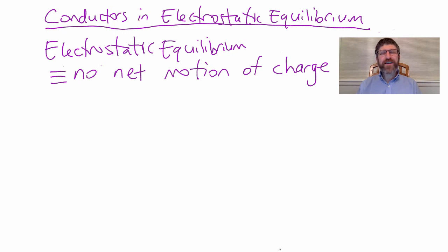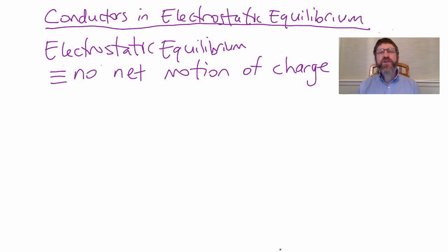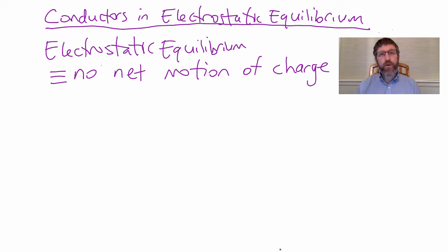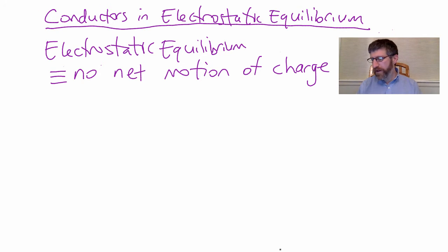The next topic we'll be discussing is conductors in electrostatic equilibrium. Electrostatic equilibrium is defined as the situation in which there is no net motion of charge. If a conductor is in electrostatic equilibrium, there is no net motion of charge, and if there is no net motion of charge, that conductor is in electrostatic equilibrium. Notice this is only for conductors.